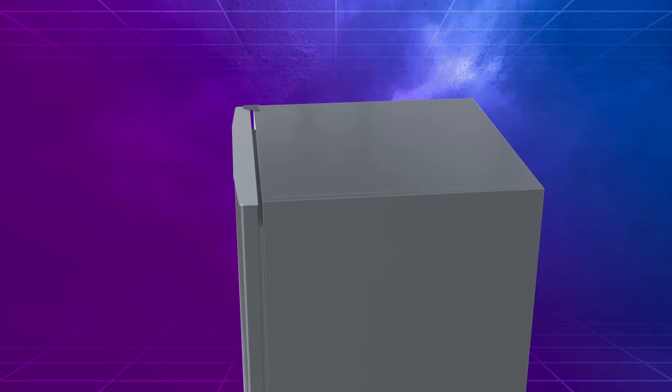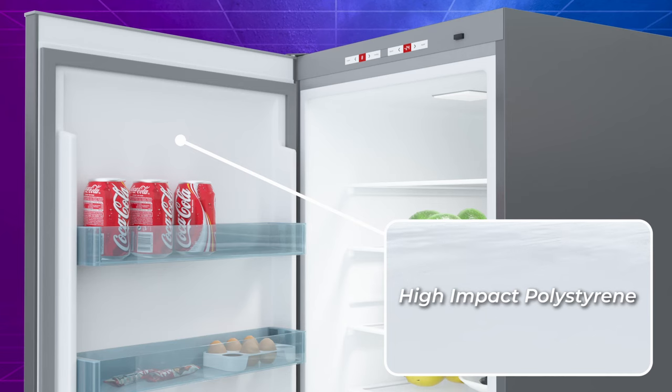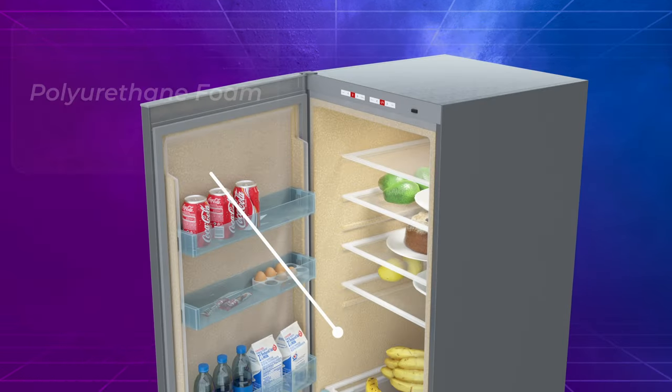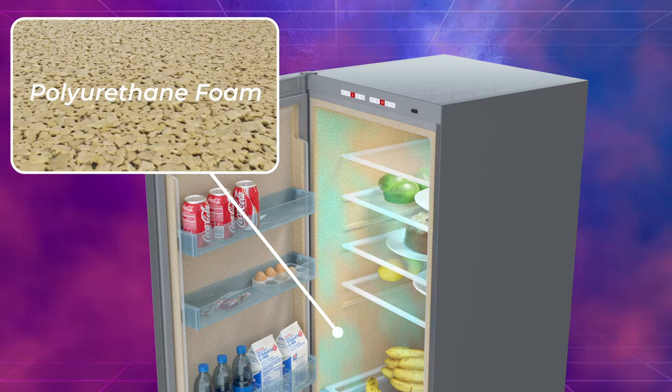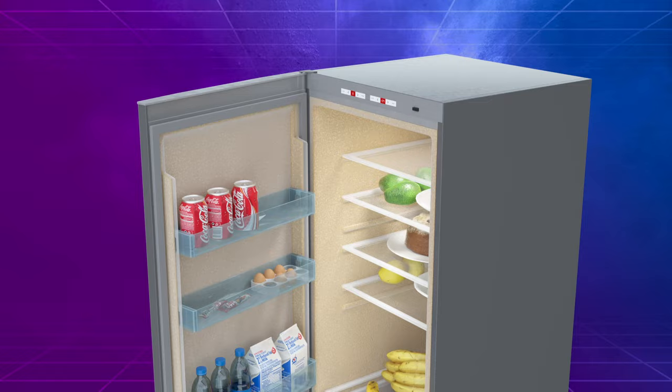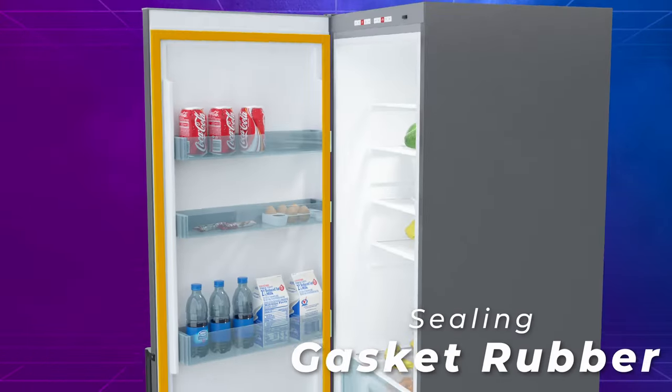The inner liner and door lining are made from high-impact polystyrene and are insulated with rigid polyurethane foam. This insulation keeps the cold in and the heat out, ensuring that your food stays fresh and cool. A gasket rubber seals in the cold.